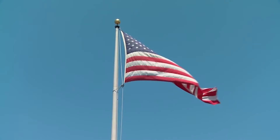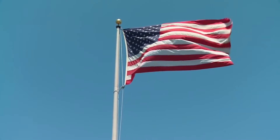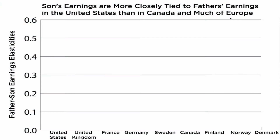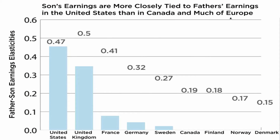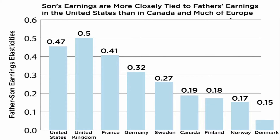The United States is facing a crisis of opportunity. Studies have shown that among developed countries, the U.S. has a very high correlation between the earnings of parents and the earnings of their children. In other words, the rich are staying rich and the poor are staying poor.